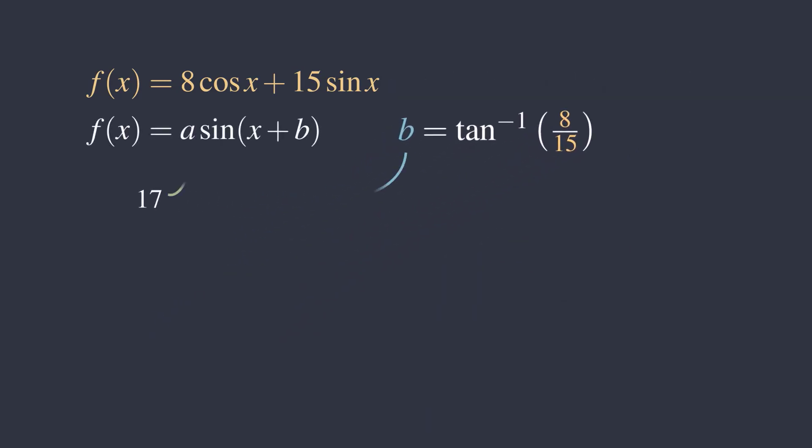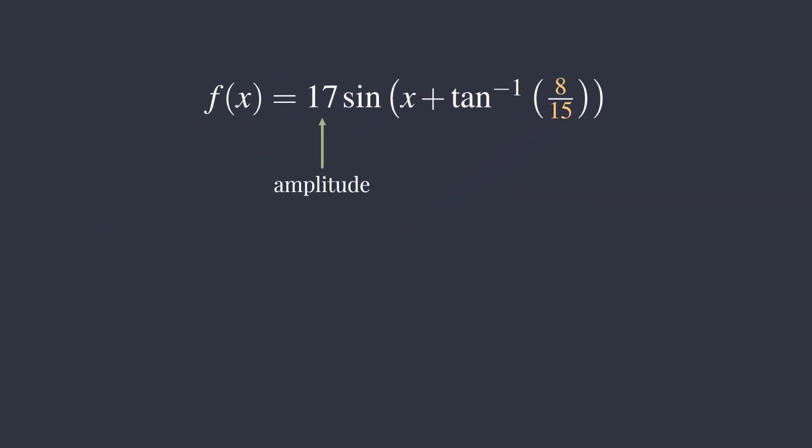Now, plugging a and b back into a times sine of x plus b, we have 17 times this sine function. Because the amplitude of this sine function is 17, and there are no vertical translations, the maximum value of f is 17, and the minimum value of f is negative 17.